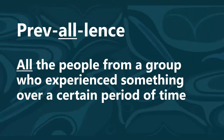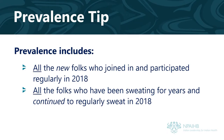It's all the people from a group — in this example, from my community — who experienced something over a certain period of time, in this example, who regularly attended ceremonial sweats in 2018. Prevalence includes everyone: all the new folks who joined and participated regularly in 2018, and all the folks who have been sweating for years and continued to regularly attend sweats in 2018.